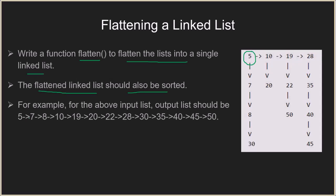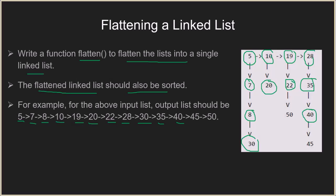The output will start with 5, the smallest element, then 7, then 8, then 10, then 19, then 20, 22. Notice that 30 is waiting — after 22 we have 28, then 30, then 35, then 40, then 45 and 50. In this way we flatten the linked list while keeping it sorted.